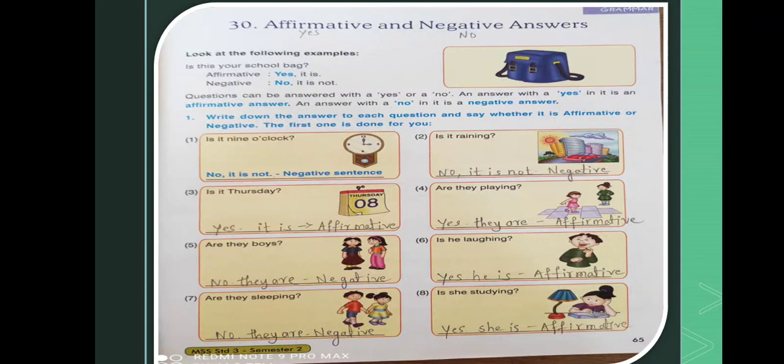Questions can be answered with a yes or no. An answer with a yes in it is an affirmative answer and an answer with a no is a negative answer. Write down the answer to each question and say whether it is affirmative or negative. The first one is done for you already. So first one, is it nine o'clock? No it is not. Negative sentence.